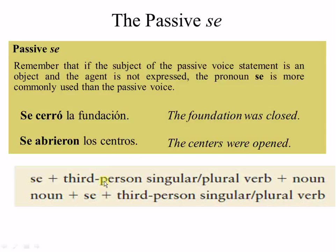Notice that you can have two different formulas. You can have se plus a third person singular or plural verb plus noun. But you could also have noun, se, and third person singular or plural verb. For example, la fundación se cerró, or los centros se abrieron.